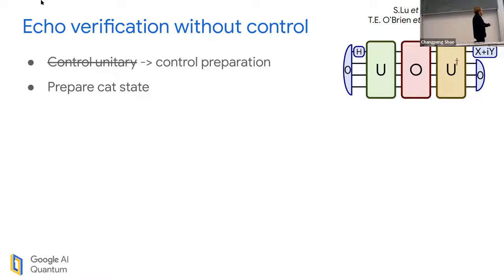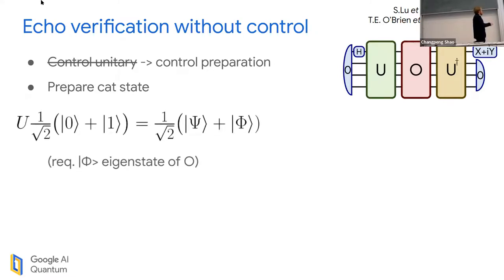I want to talk about echo verification without control, because it's nice to be able to remove control qubits. The trick is I replace the control - I kind of put it on the first qubit here. I'm actually saying I'm controlling the preparation rather than controlling the unitary. I replace this unitary with a control preparation.